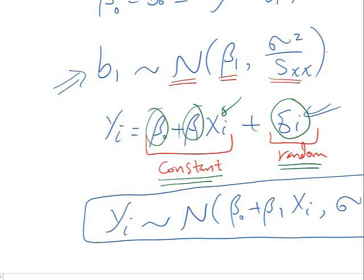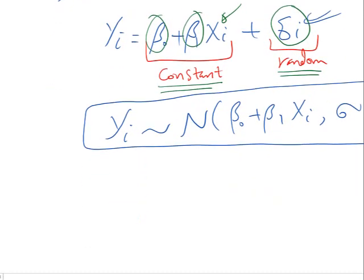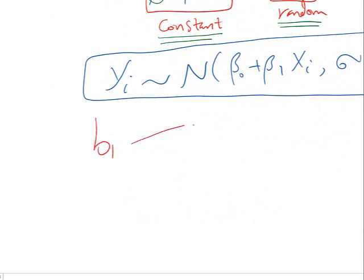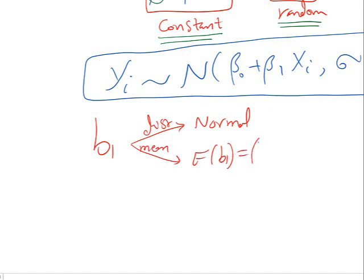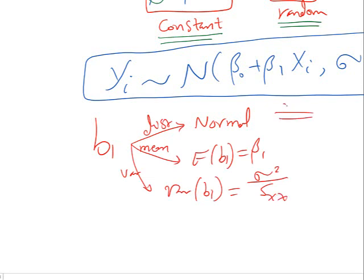We need to prove three things: first, that the distribution of b₁ is normal; second, that the mean of b₁ is β₁ — that is, E[b₁] = β₁; and third, that the variance of b₁ equals σ²/Sₓₓ.